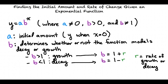b can also help us determine the rate of growth or decay. If b is greater than 1, which implies exponential growth, then b equals 1 plus r, where r is the rate of growth. And if b is less than 1, which implies exponential decay, then b equals 1 minus r.